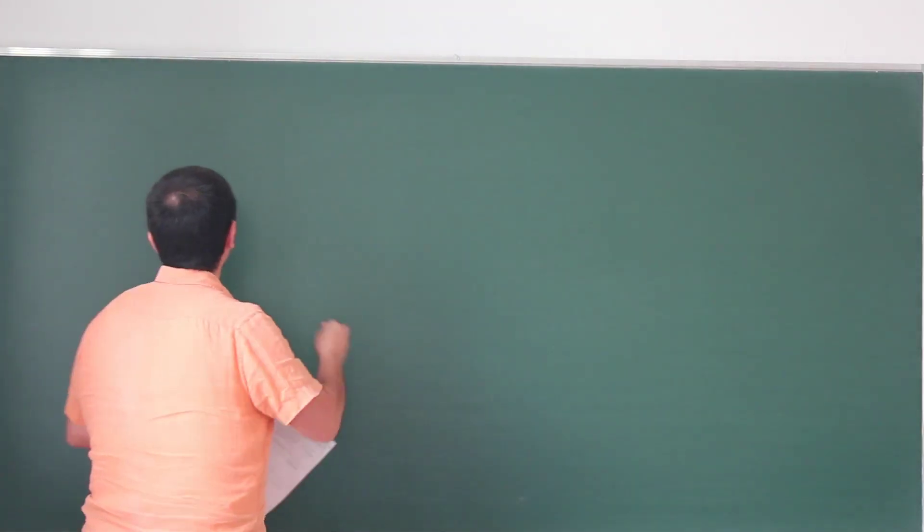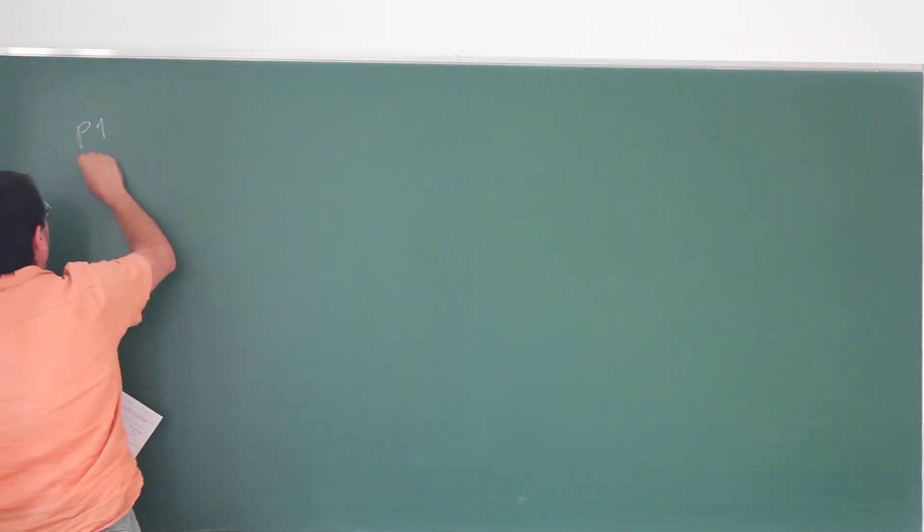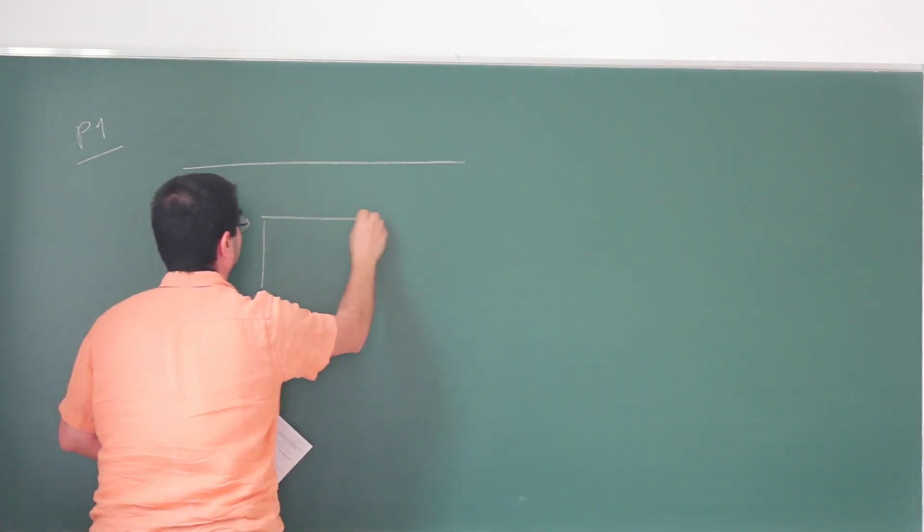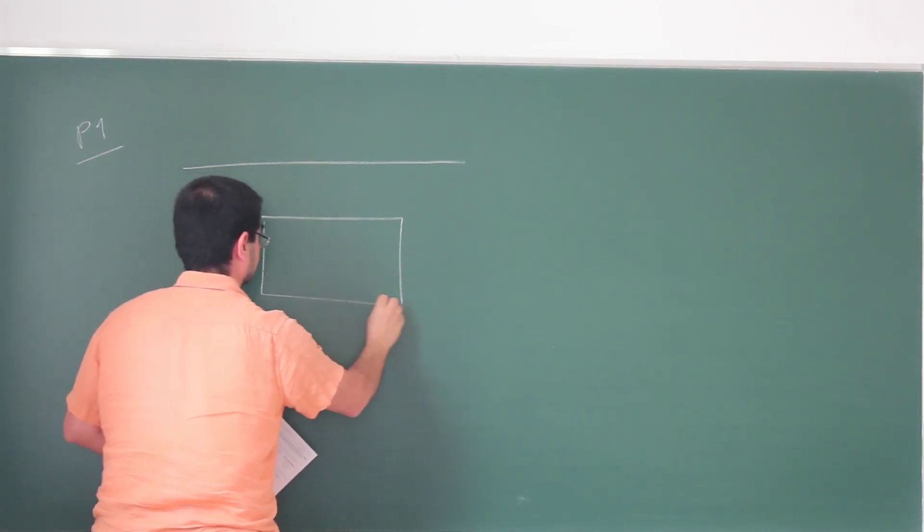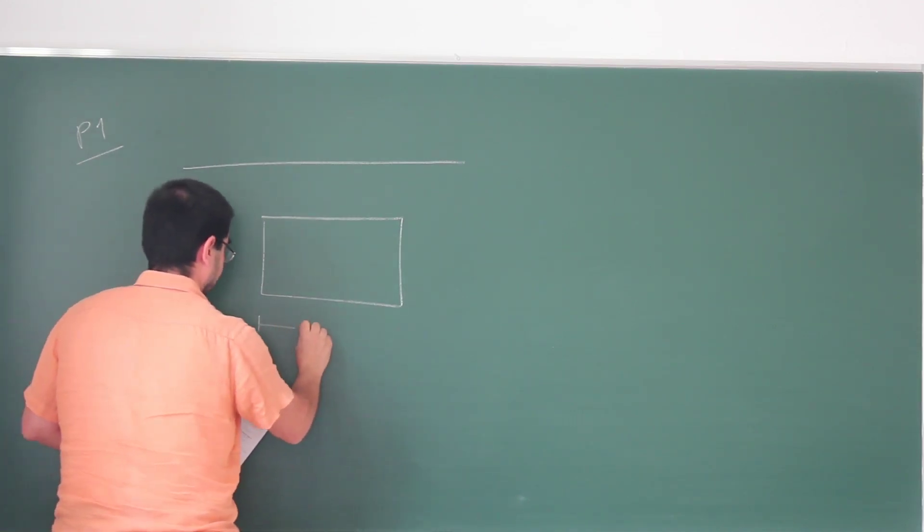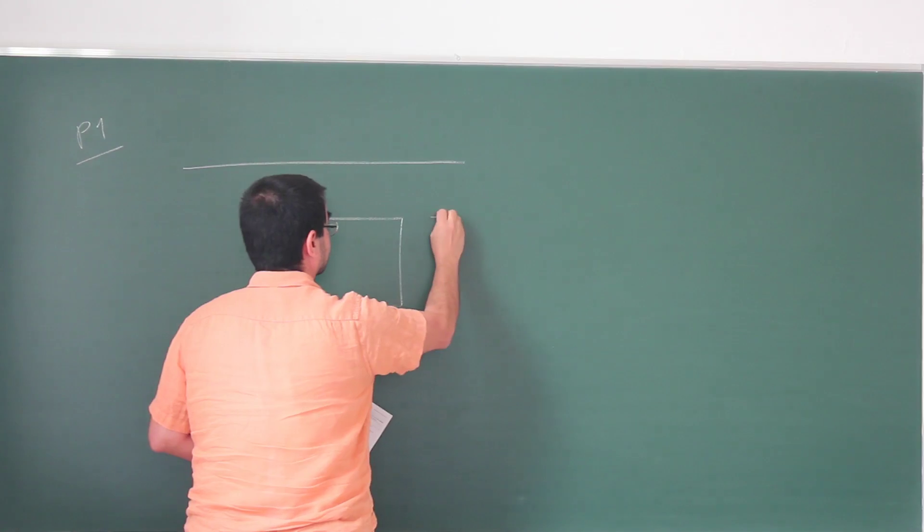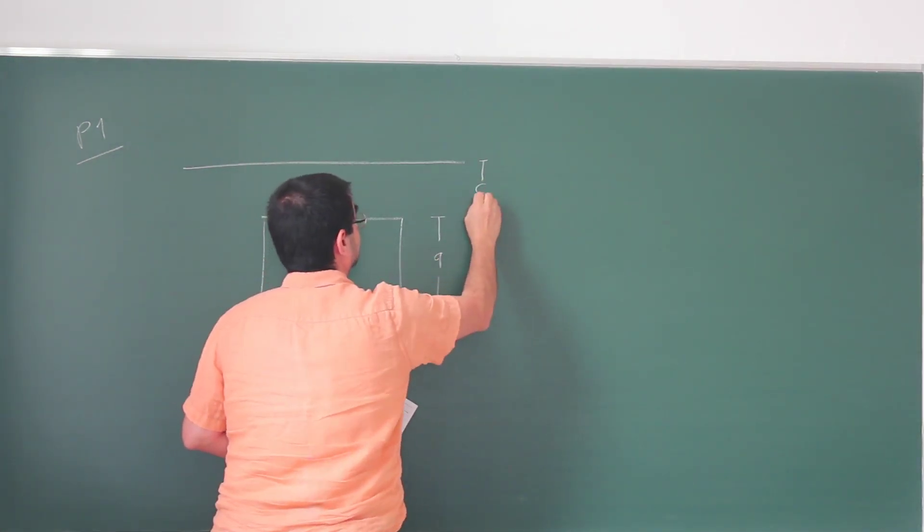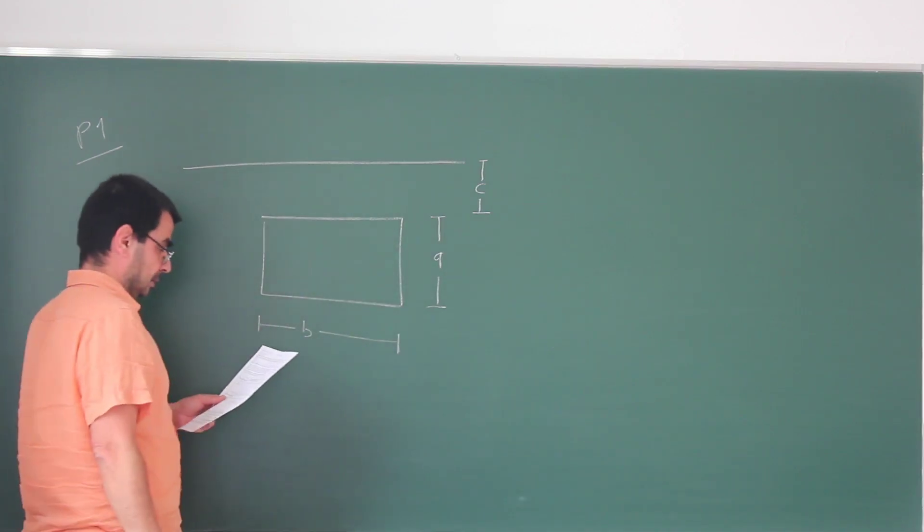In this problem we have a current carrying wire and below this wire we have a rectangular loop. The dimensions of the loop is given, so this is B and this is A, as well as the distance of this loop from the wire is C.